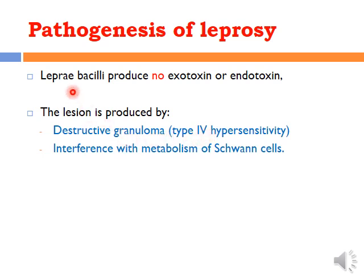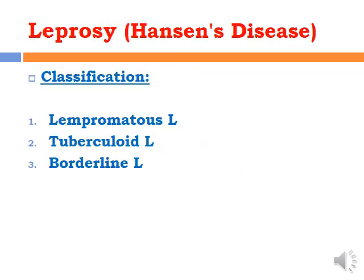TB bacilli also interfere with the metabolism of Schwann cells, affecting nerve function. The classification of leprosy is based on the immune status of the affected person: lepromatous leprosy, tuberculoid leprosy, and borderline leprosy — which is borderline between lepromatous and tuberculoid.